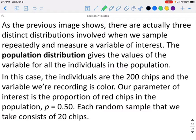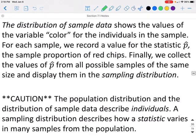Each random sample that we take consists of now 20 chips. The distribution of sample data shows the values of the variable color for the individuals in the sample. For each sample, we record a value of the statistic, in this case the p̂, for the sample proportion of red chips. And then finally, we collect all those p̂ values to make our sampling distribution.